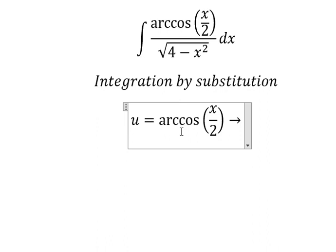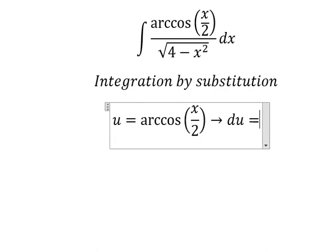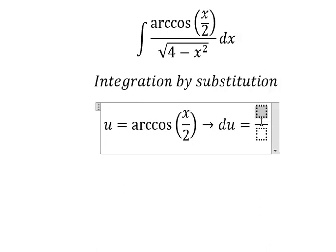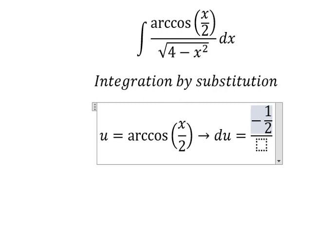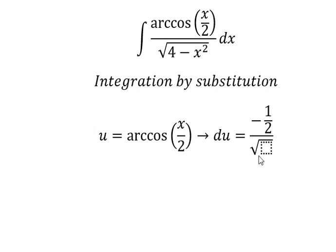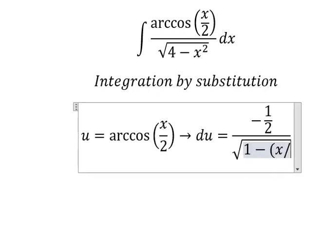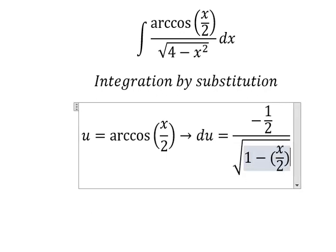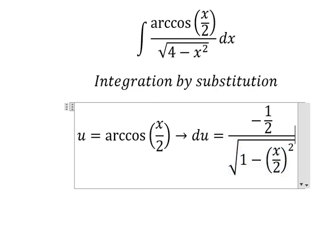Later, we do the first derivative for both sides. So this one we will have negative one over two over the square root one minus x over two to the power of number two dx.